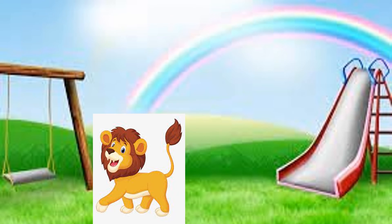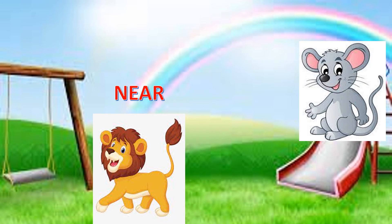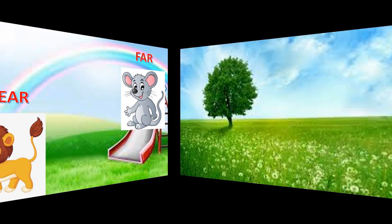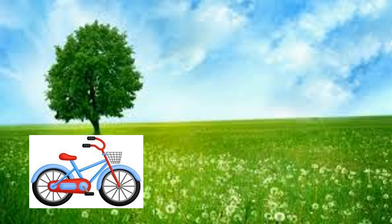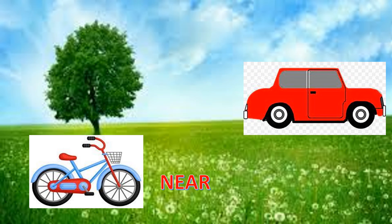The lion is near to the swing, but the mouse is far from the swing. You can see this cycle — cycle is near to the tree and the car is far from the tree.